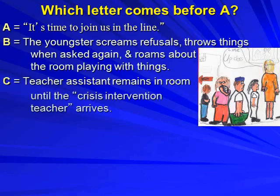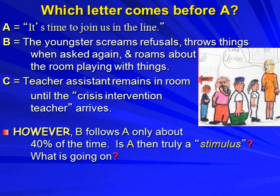What letter comes before A? The teacher says it's time to join us in line. The youngster screams refusals, throws things when asked again to line up, and roams about the room playing with things. The teacher takes the rest of the class out, but the teacher assistant remains until the crisis intervention teacher arrives. This behavior of screaming and throwing things only happens 40% of the time when the youngster is asked to line up. Then is A truly an antecedent? What's going on if the behavior varies from day to day given the same stimulus?